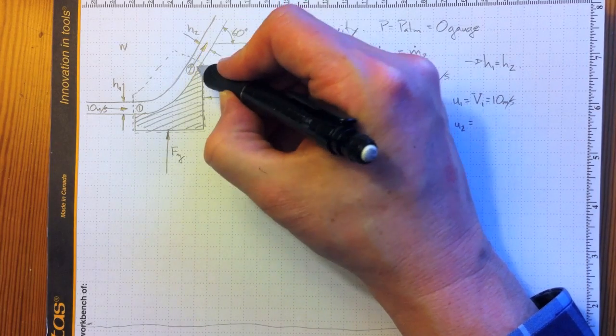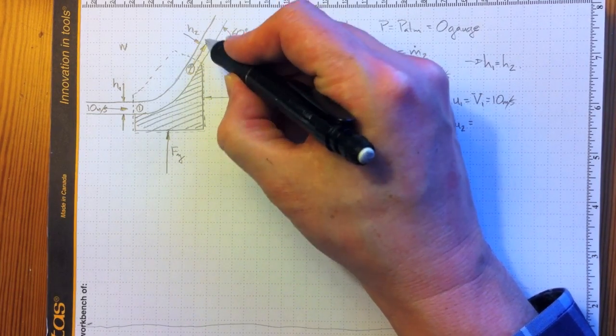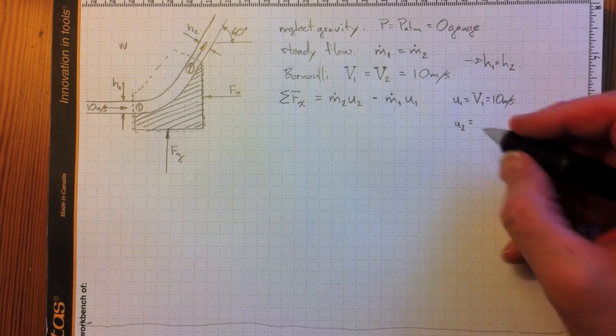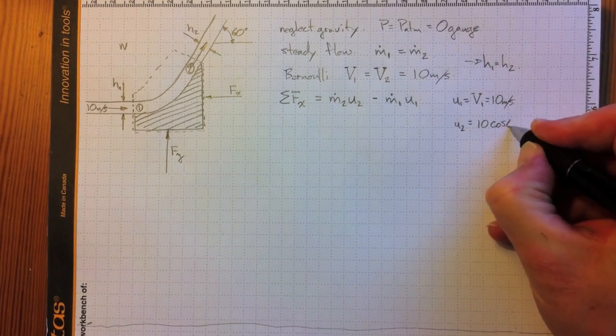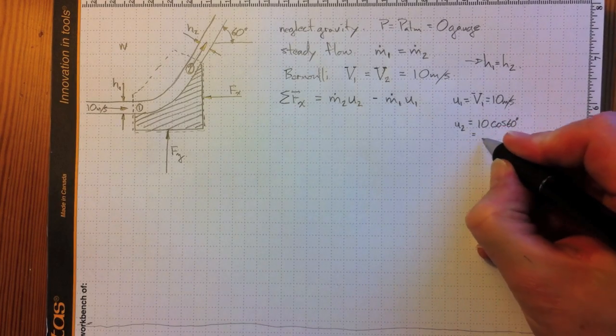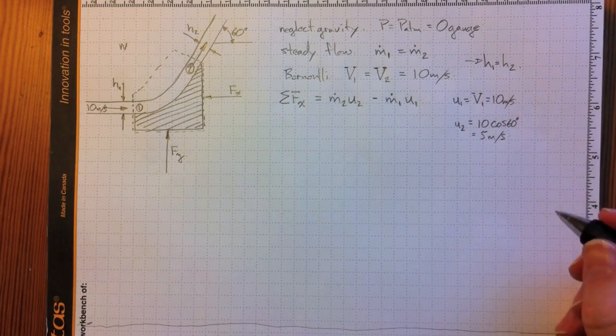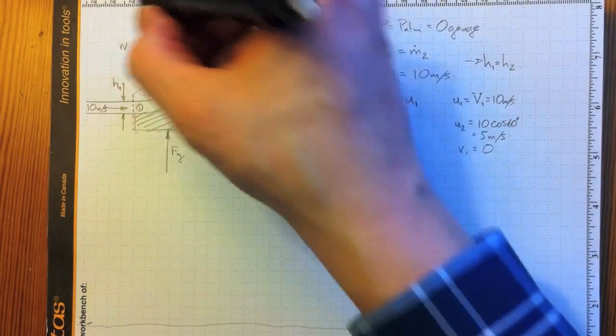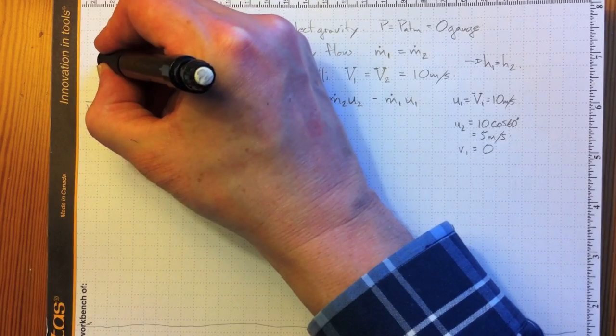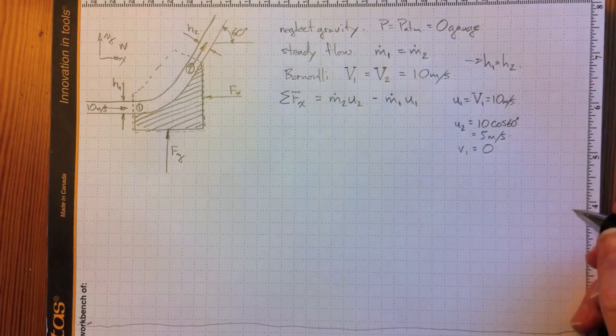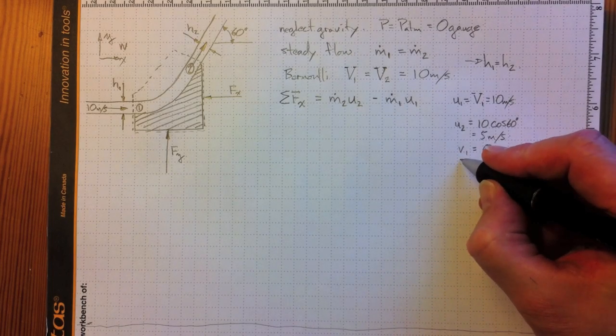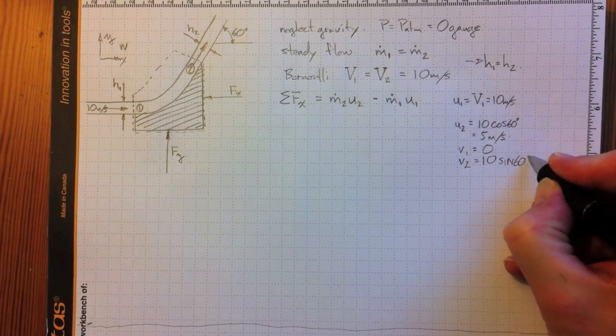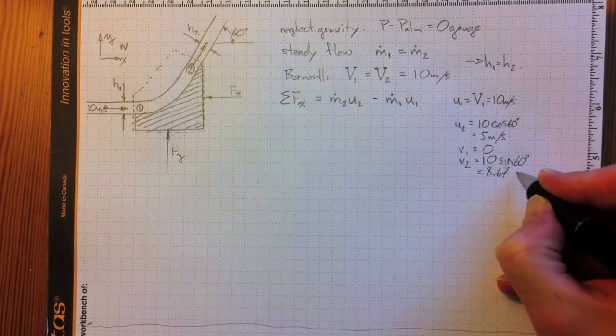u2, it's now 10 meters per second up that way, but the x component is going to be smaller than that 10 meters per second. It's going to be 10 times the cosine of 60 degrees, or 5 meters per second. V1, 0, no vertical velocity here. There's the y direction. There's the positive x direction. And V2 equal to 10 times the sine of 60 degrees, or 8.67 meters per second.